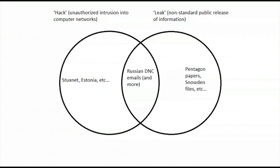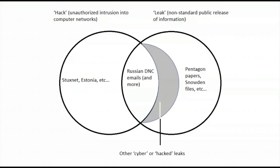I want to clarify a couple of related concepts to be clear about what I'm not talking about. Because most leaks of information now involve internet technologies, such as the Snowden disclosures, they often get labelled as a cyber security issue or a hacked leak. But I'm not going to talk about any leaks that do not also involve an unauthorized intrusion into computer networks in order to obtain the information.